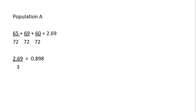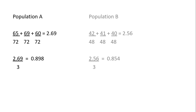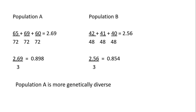For that example, population A should give 0.898 and population B should give 0.854, so population A is more genetically diverse. It would be more likely to withstand environmental change and more likely to survive because it has higher allele diversity within the population.